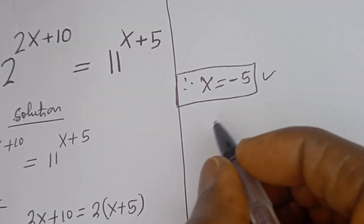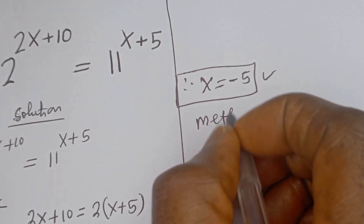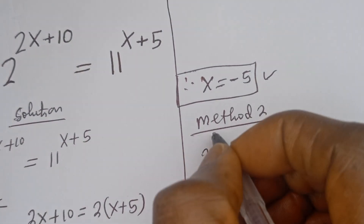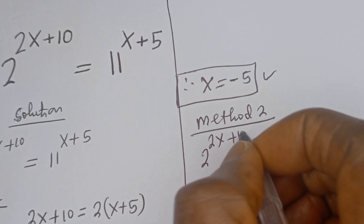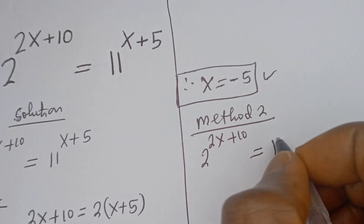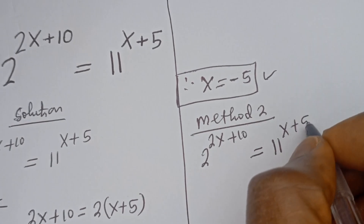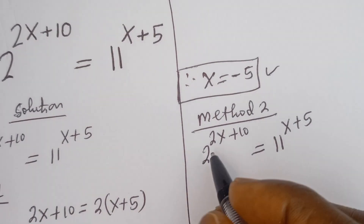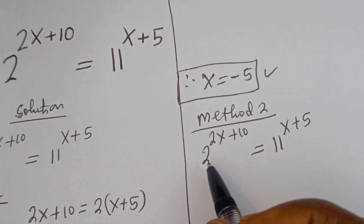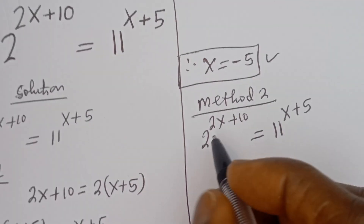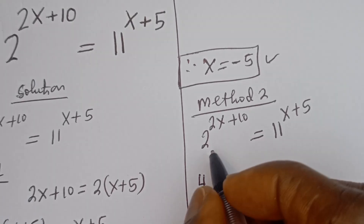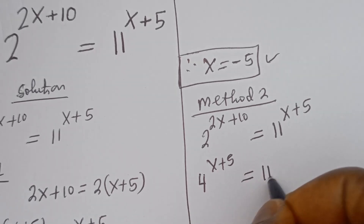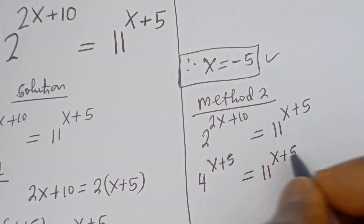Let's consider the second method. We have the given equation: 2 to the power of 2x plus 10 is equal to 11 to the power of x plus 5. Using our index rules, this becomes 4 to the power of x plus 5 is equal to 11 to the power of x plus 5.